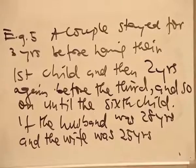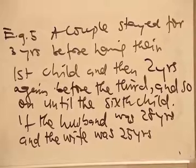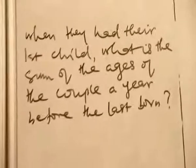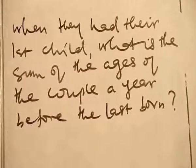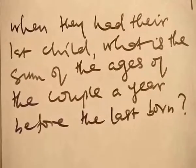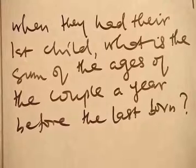If the husband was 28 years and the wife was 25 years when they had their first child, what is the sum of the ages of the couple a year before the last born?